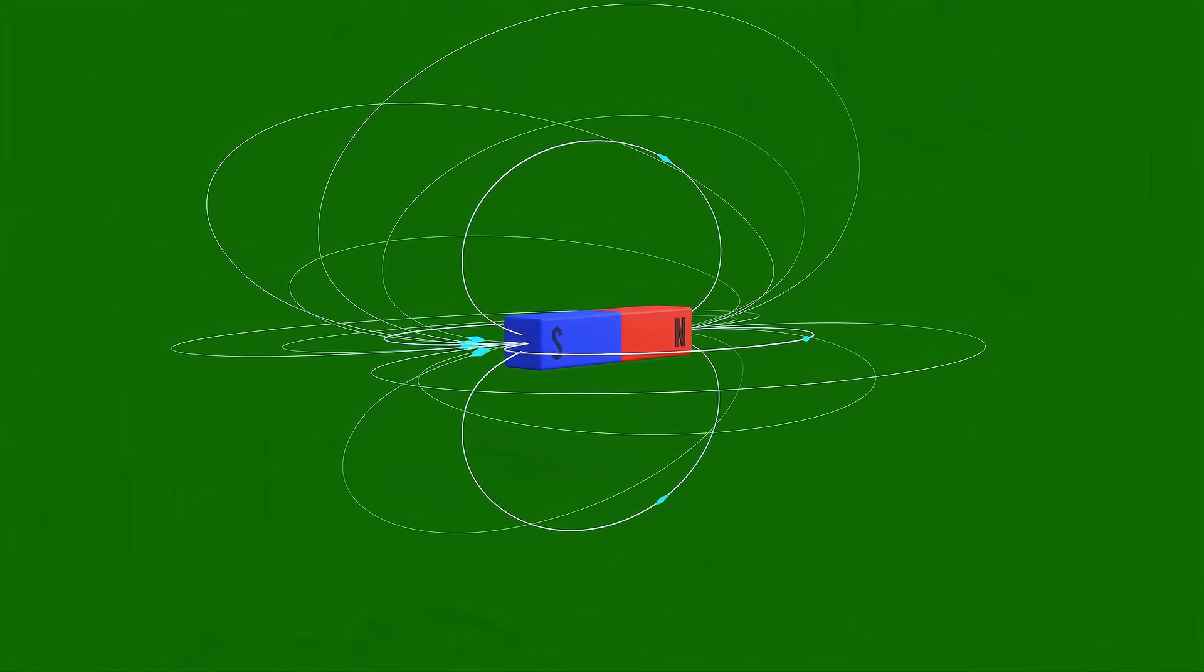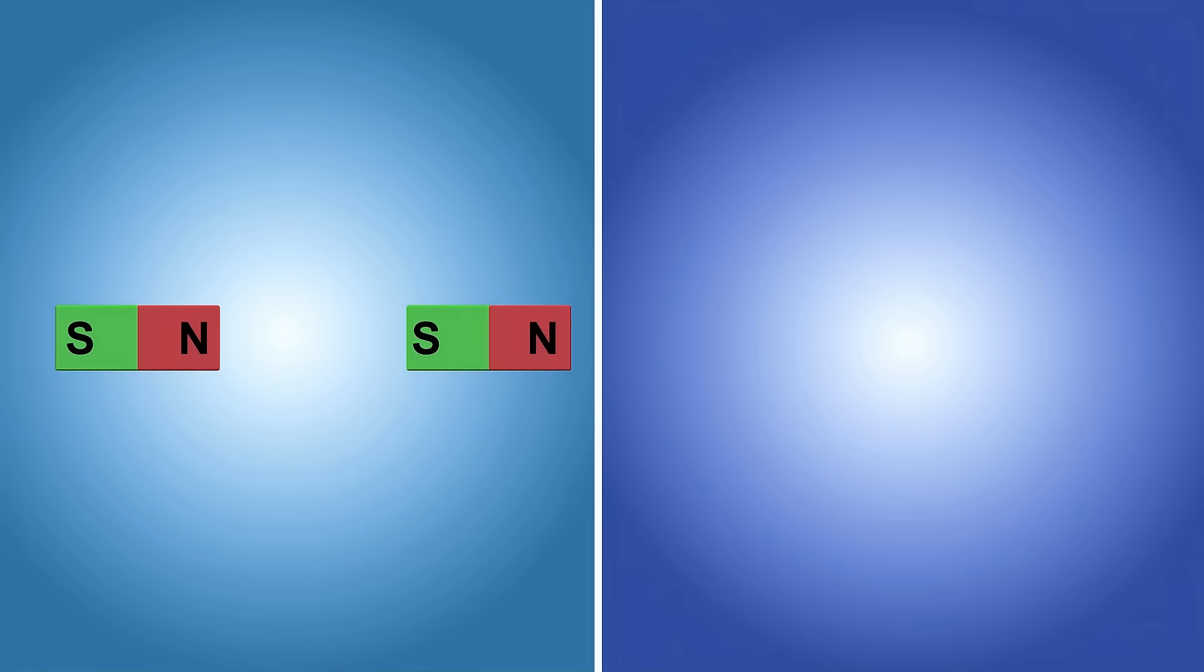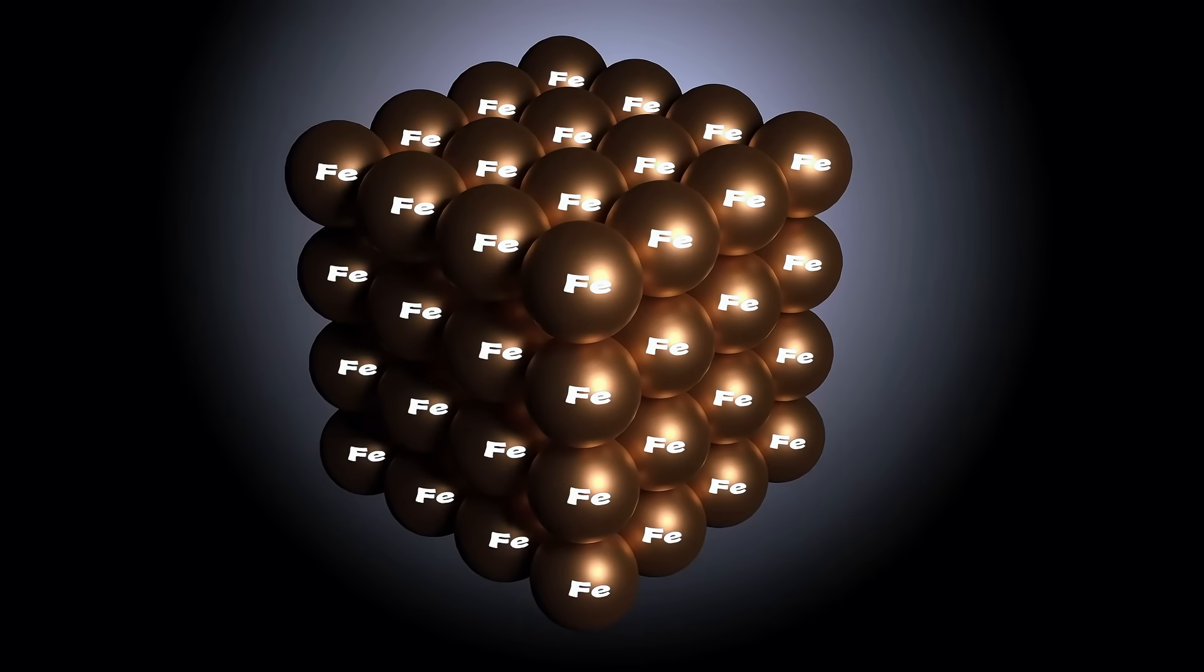You've probably learned in school that magnets have a north pole and a south pole. And opposite poles attract while like poles repel. But that's really just basic. It doesn't tell us anything. To truly understand magnetism, we need to zoom all the way in, down to the atomic level.